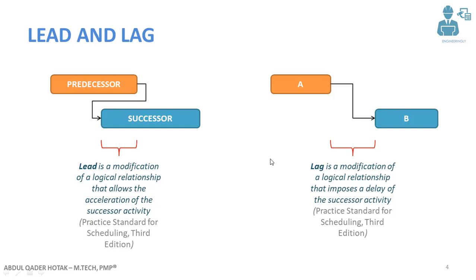In lag, you delay the successor activity. This can be for different reasons — for example, in the construction industry, when casting concrete you must wait a specific amount of time for the concrete to dry before carrying on with other work. This waiting period between activity A and activity B is called lag. Lag is a modification of a logical relationship that imposes a delay on the successor activity, as defined in the Practice Standard for Scheduling, Third Edition.